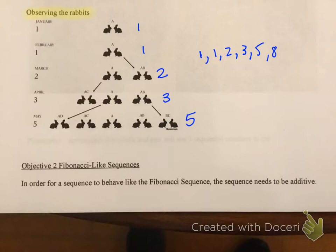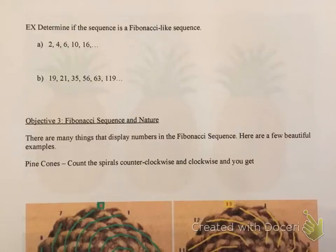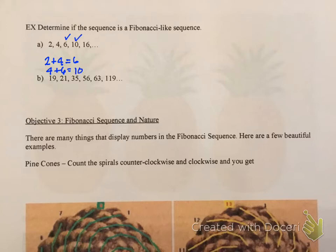We're ready for objective two: Fibonacci-like sequences. MyMathLab would ask you to look at a sequence and determine if it is Fibonacci-like in nature. We have to remember that for the sequence to be Fibonacci-like, it has to be additive. Part A: determine if 2, 4, 6, 10, 16 is a Fibonacci-like sequence. We take the first two numbers and add them — two plus four gives six, that's the third number. Four plus six gives ten, six plus ten gives sixteen. Yes, it is Fibonacci-like because adding the previous two numbers gives the next number in the sequence.